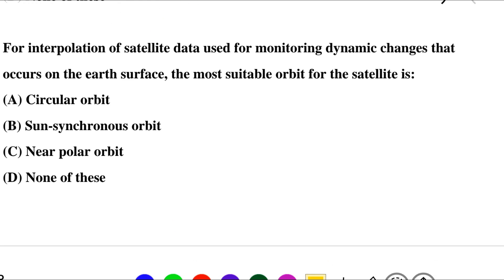Next question: for the interpretation of satellite data used for monitoring dynamic changes that occur on the earth's surface, the most suitable orbit for the satellite is — option A: circular orbit, option B: sun-synchronous orbit, option C: near polar orbit, option D: none of the above. So the correct answer is option B: sun-synchronous orbit.